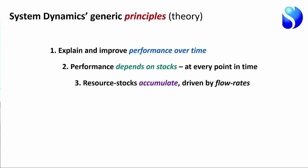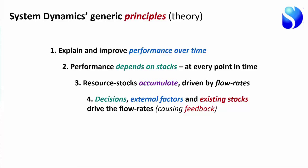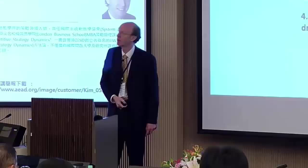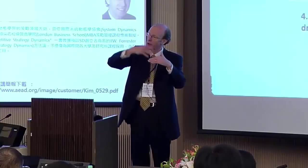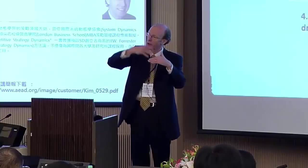The next thing we want to know is why do these asset stocks accumulate? Why do we win customers? Why do we lose customers? Why do staff leave us? Why does reputation increase or fall? It turns out that all of these things accumulate or deplete because of decisions we take, external factors outside of our control, and the existing stocks in the system. The relationship between existing stocks, flow rates, and performance gives rise to feedback. Feedback can accelerate growth, accelerate decline, and cause limits to growth. With delays added, you can get cyclicality — boom and bust — these dynamic performance outcomes we're concerned about.